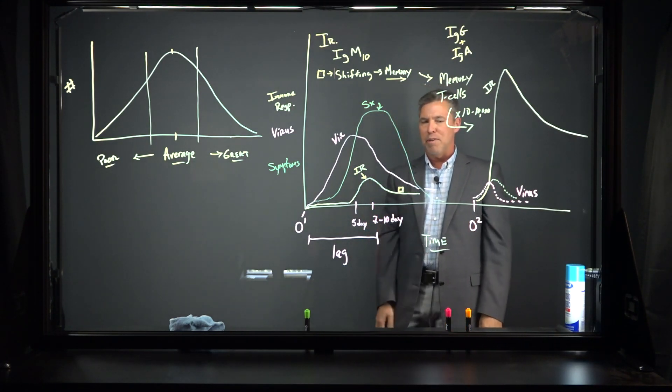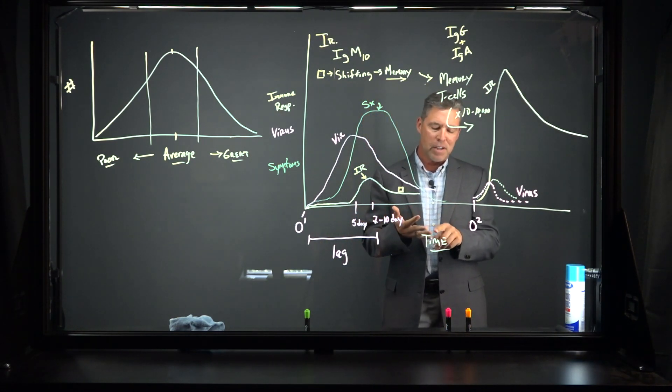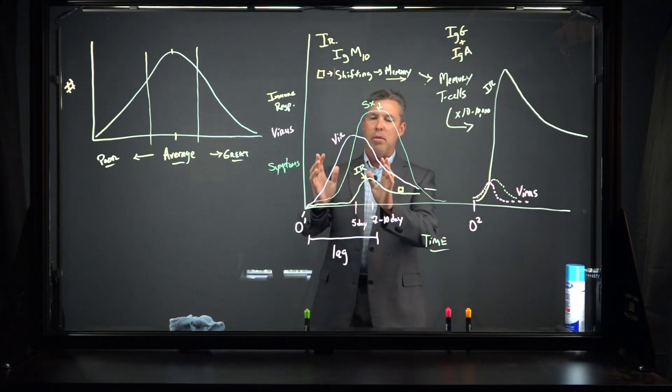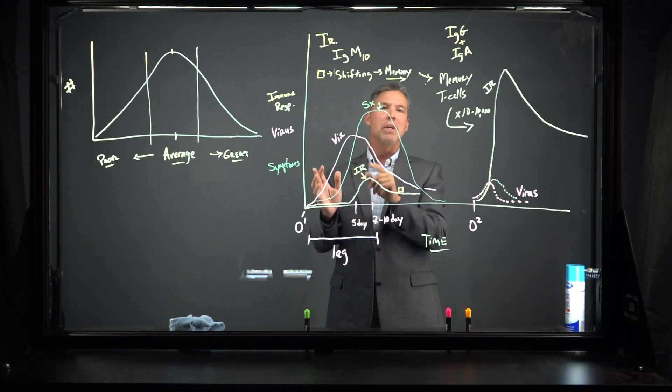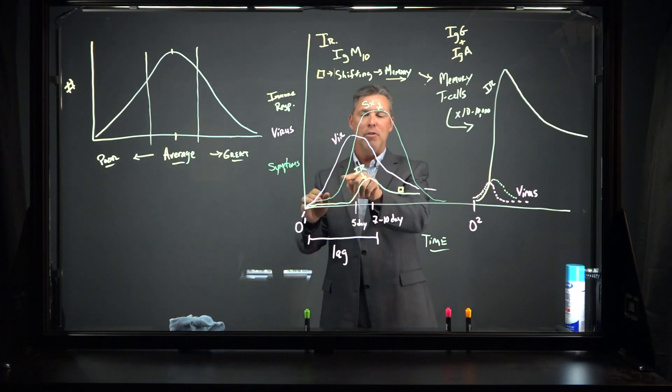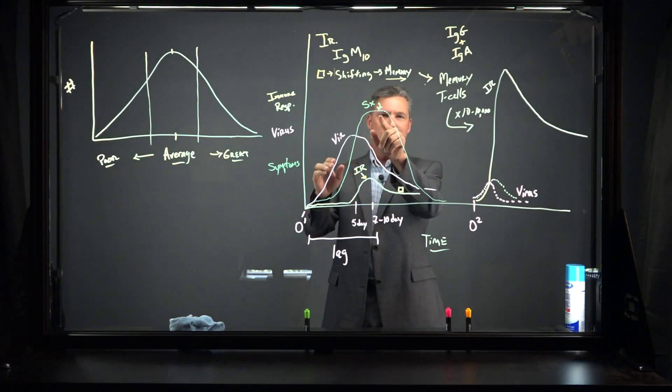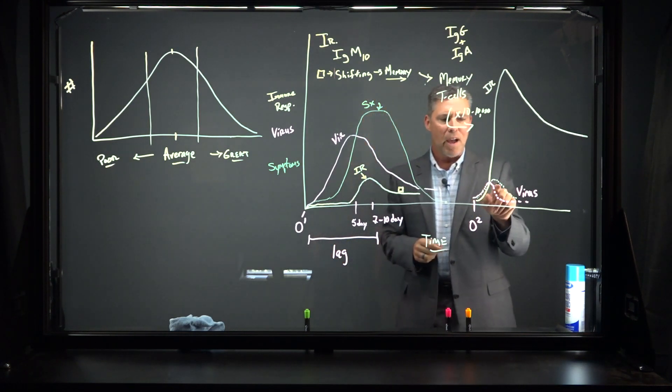So why are we doing vaccines? Well, the vaccines, the Moderna vaccine, the Pfizer vaccine, the Johnson and Johnson vaccine, all mimic this first infection without giving you the symptoms. And you might say, well, I still get body aches or a headache or a fever. Yeah, but those are really mild. Those would be way down here. The symptoms I'm talking about here are respiratory symptoms that are really severe and can put you in the hospital.